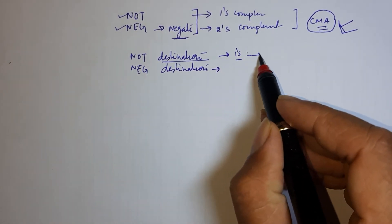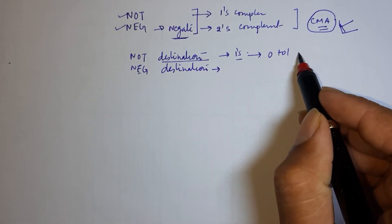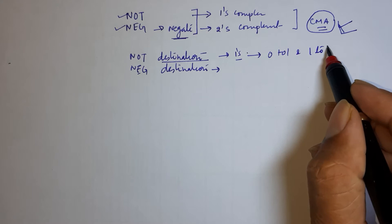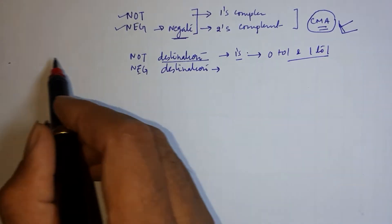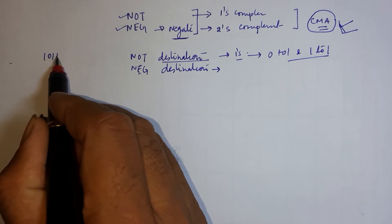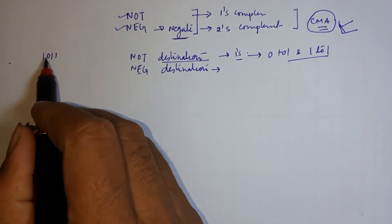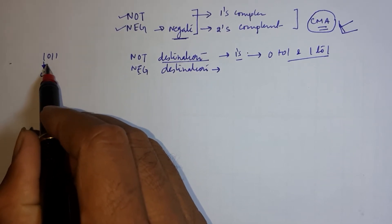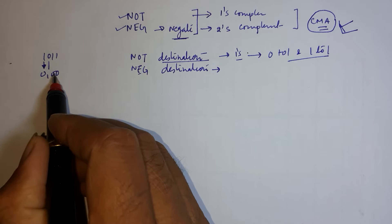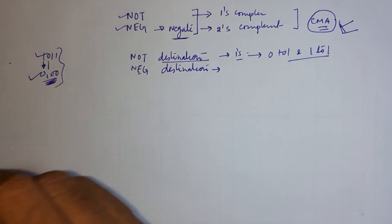One's complement means just invert 0 to 1 and 1 to 0. So suppose there is a number, and if you have to find one's complement of this number, then just make 1 to 0, 0 to 1, 0, 0. So this will be one's complement of this.